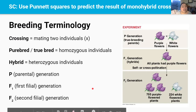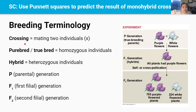Before we can get into discussing monohybrid crosses and Punnett squares, we must first learn some new vocabulary. The first word is cross or crossing. When you cross something, it means you mate two individuals, and usually this mating is represented by an X, as shown in this picture.